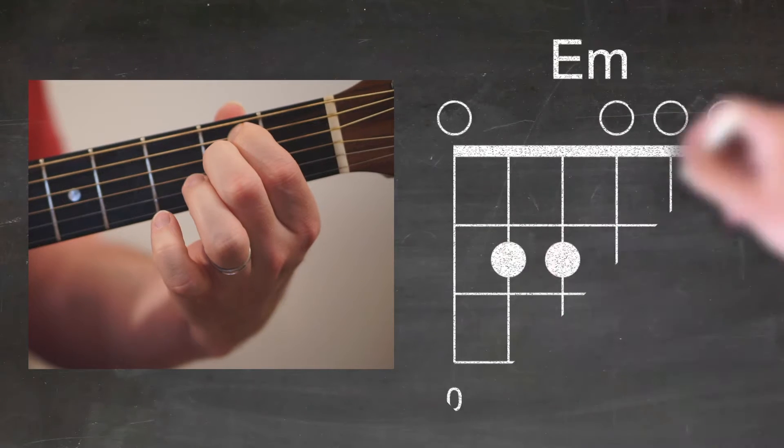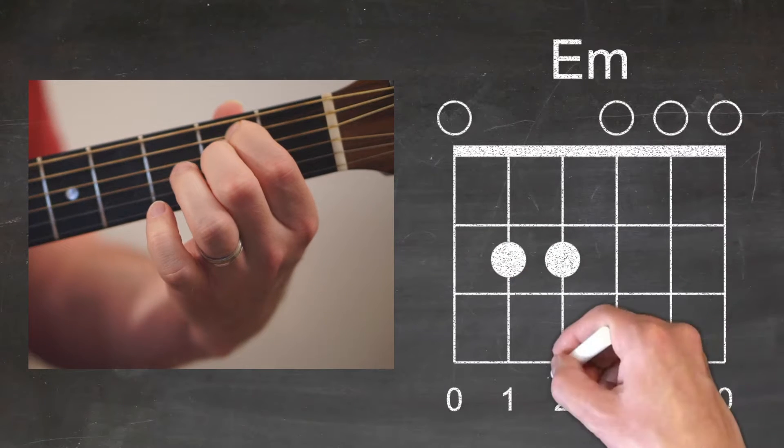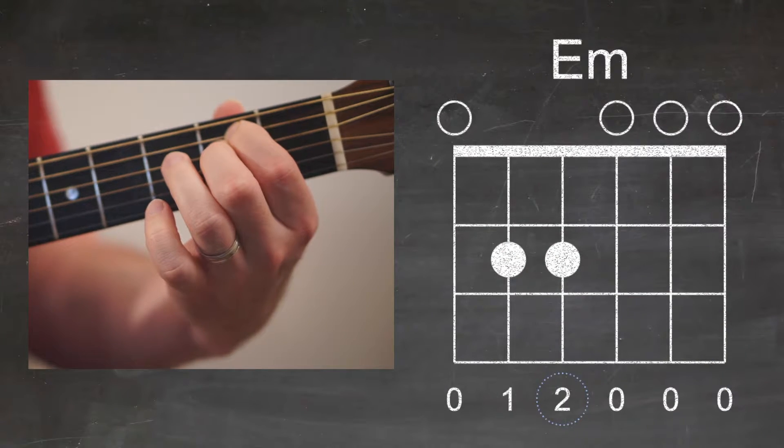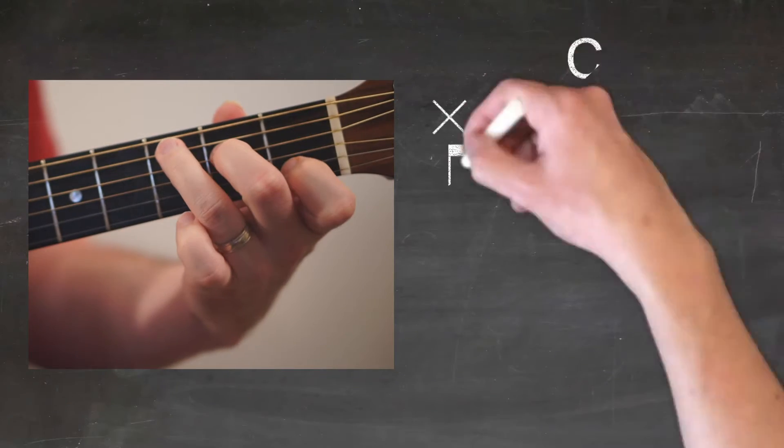Here's your second chord, E minor. So that first finger stayed down from G. And now your second finger is going to be your common finger to the next chord.